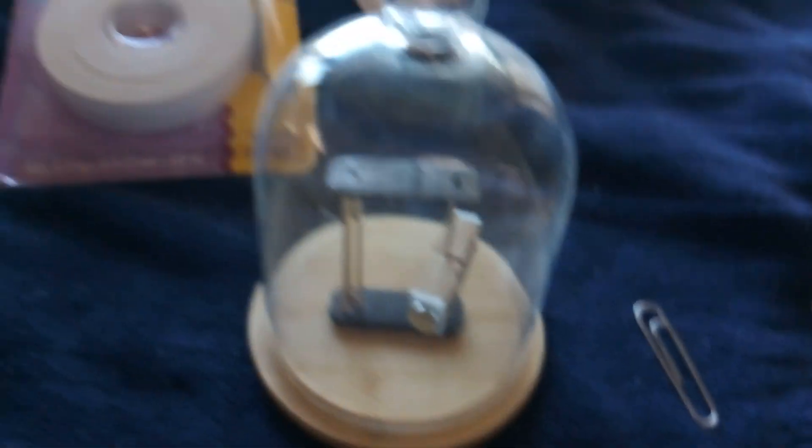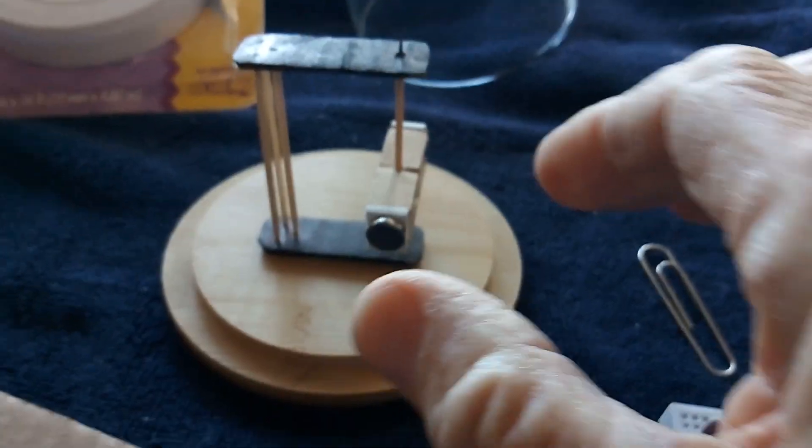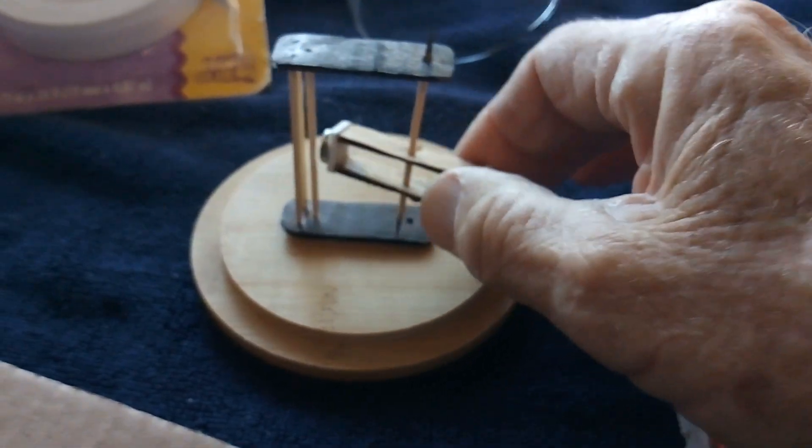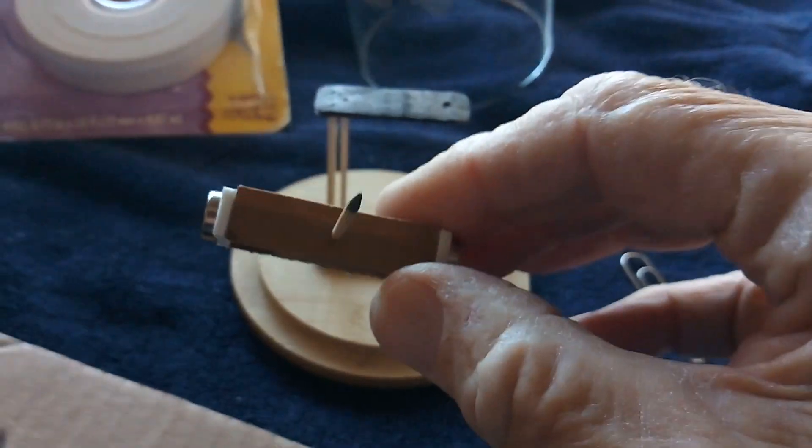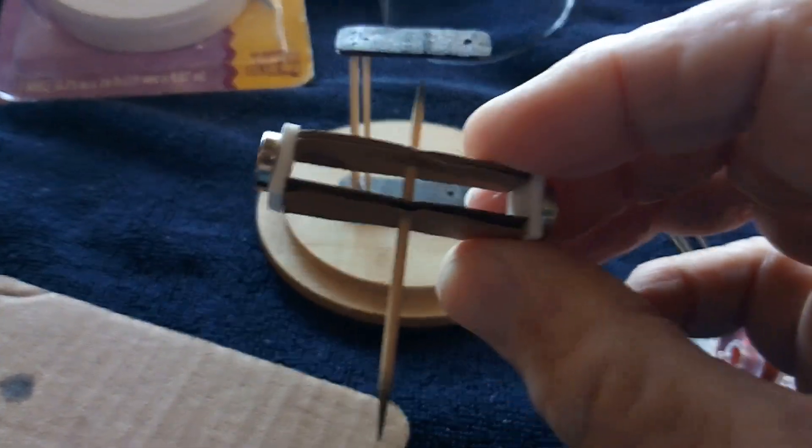But then I thought, well, what if you can't 3D print? What are you going to do? I thought, well, I think you could make it out of cardboard, and so I did. I just took a piece of corrugated cardboard and made this same thing out of cardboard.